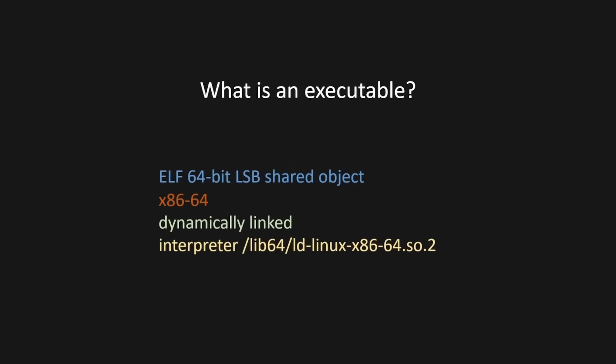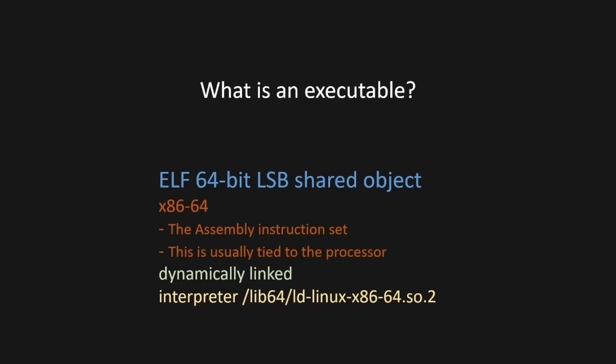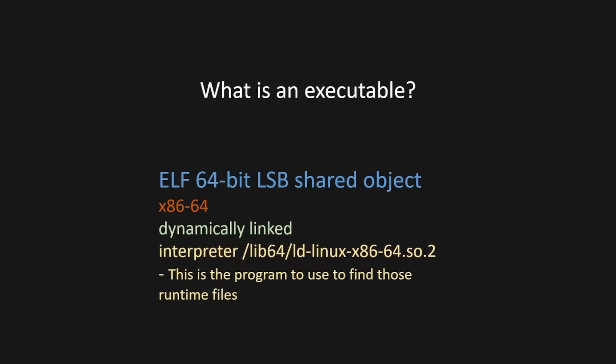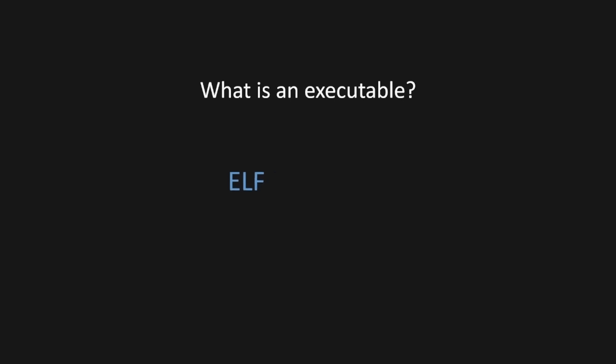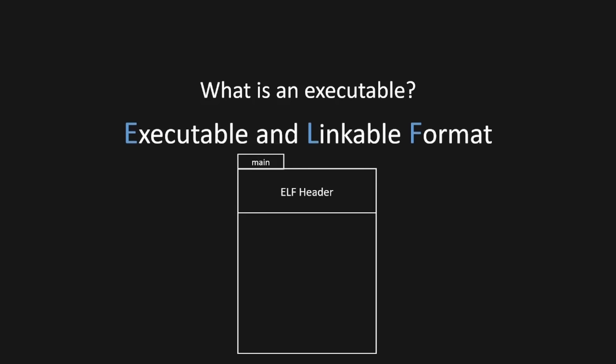So what do each of these things mean? The ELF 64-bit shows that it's of the type Executable and Linkable Format, which is a standard Linux format used for executing files. x86-64 tells us the assembly instruction set this executable was built for, usually tied to the processor it's meant to run on. Dynamically linked means this executable is going to depend on finding other files on the system at runtime. The interpreter is the program that this executable will use to find those runtime files. In Linux, an executable is an ELF — a standard Unix format that specifies how files should be structured so that when read in by the exec syscall, we know how to parse it.